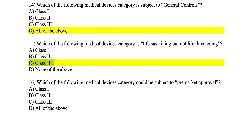Number 16: which medical device category could be subject to pre-market approval? Pre-market approval is the most rigorous approval process, used when a device or technology has not been proven before. Class three must be subject to pre-market approval, but class two could also be subject to it depending on classification. I hope this quick review of chapter one has been helpful. Please refer to the lectures before preparing for the exam. Thank you for watching — until the next video, bye.